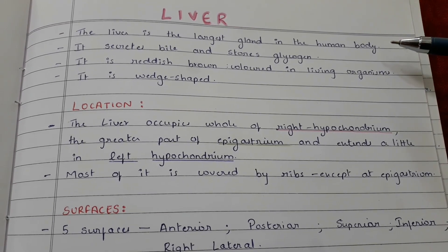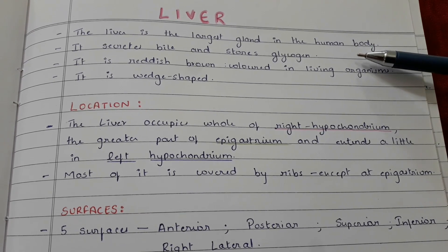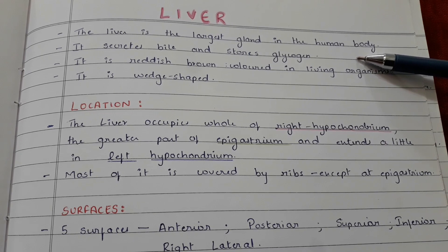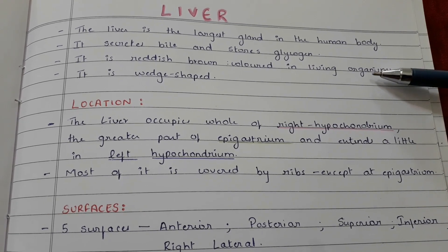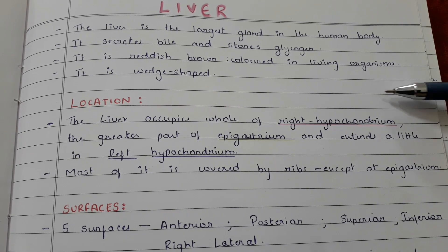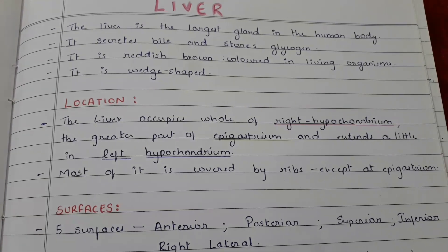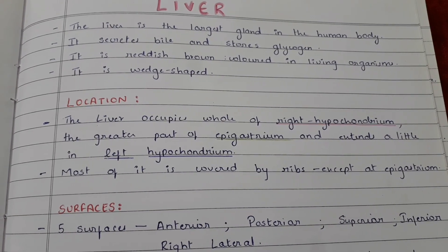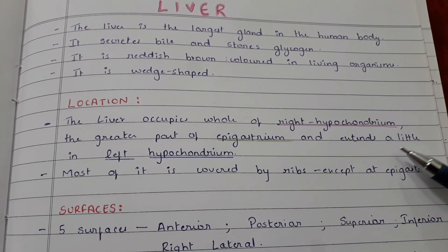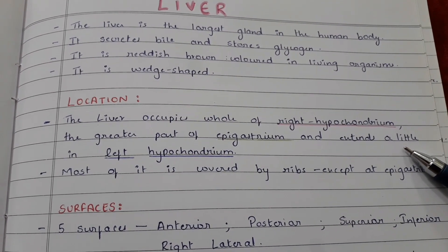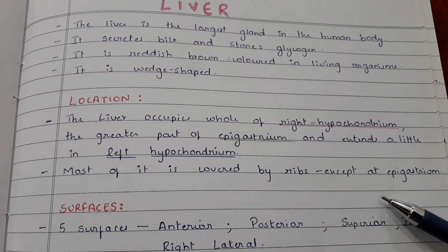The liver is the largest gland in the human body. It secretes bile and stores glycogen. It is reddish-brown colored in living organisms and is wedge-shaped. The liver occupies the whole of the right hypochondrium, the greater part of the epigastrium, and extends a little into the left hypochondrium.